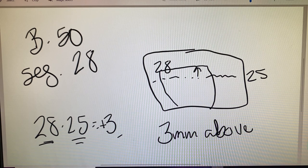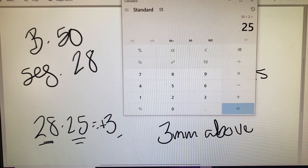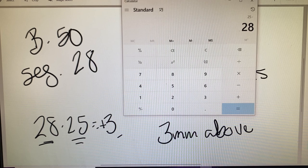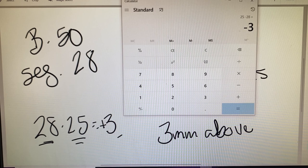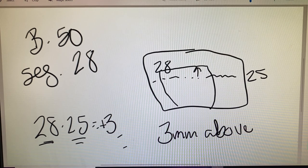On your calculator, if you feel more comfortable, you can do 25 minus 28. That's going to show you your 3. We just have to remember that it's 3 above.